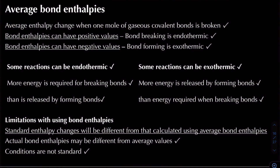Bond enthalpies can have positive and negative values. Positive values indicate an endothermic process, so bond breaking is endothermic. Negative bond enthalpies indicate an exothermic process, so bond forming is exothermic.